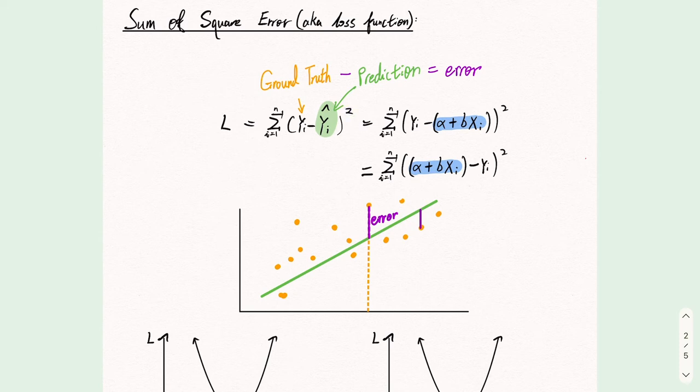It is because some data points, for example this one, will have the error be negative. So instead of increasing the error, it will actually be subtracted from the error, which makes the error smaller. To fix this, we square it and make it positive.